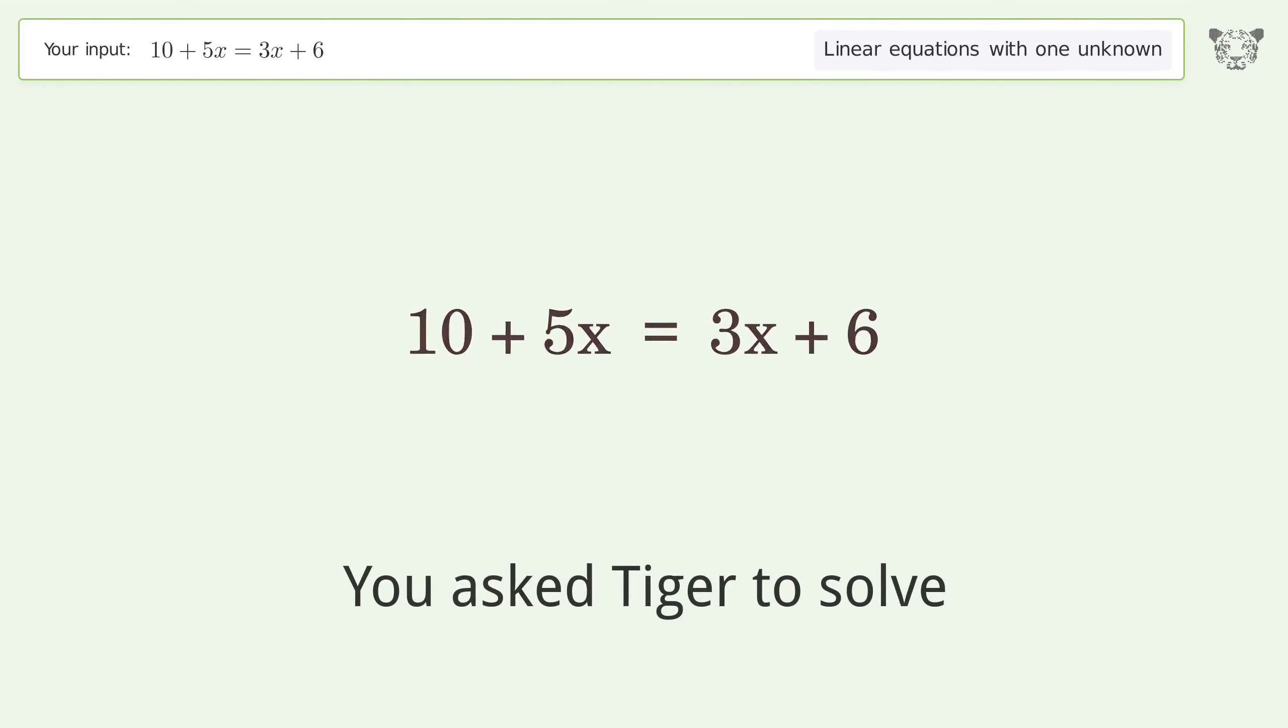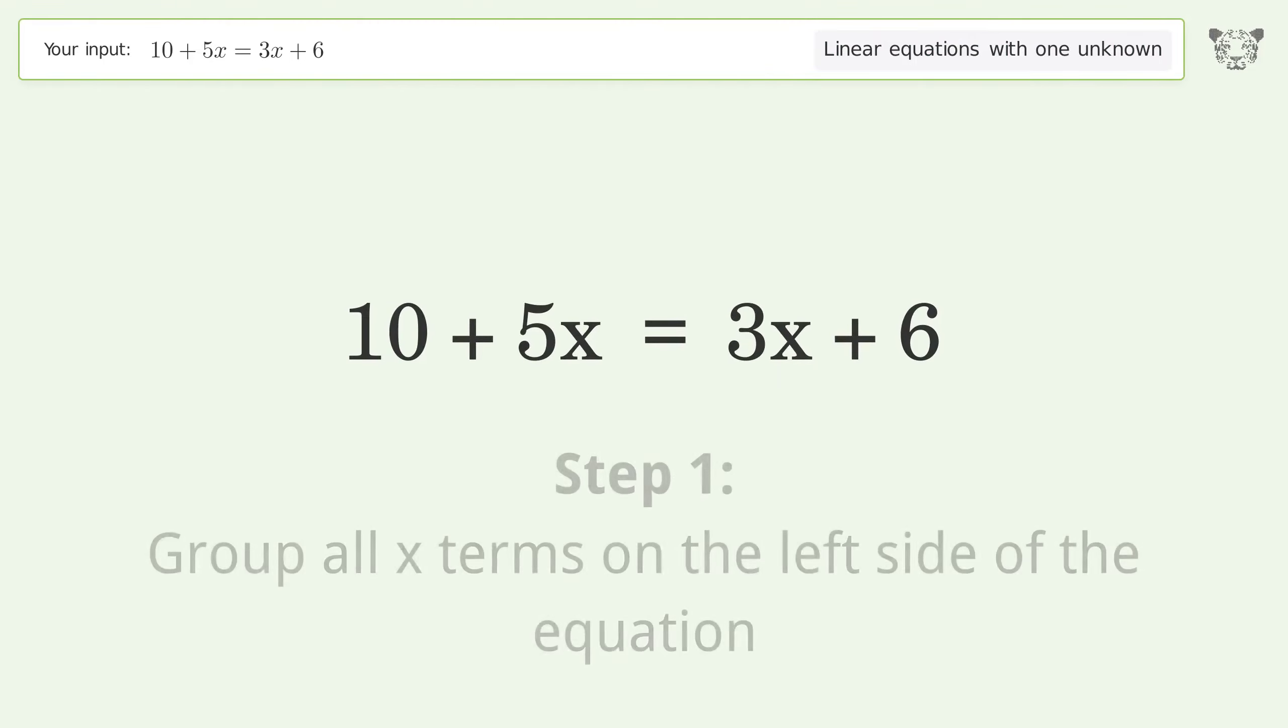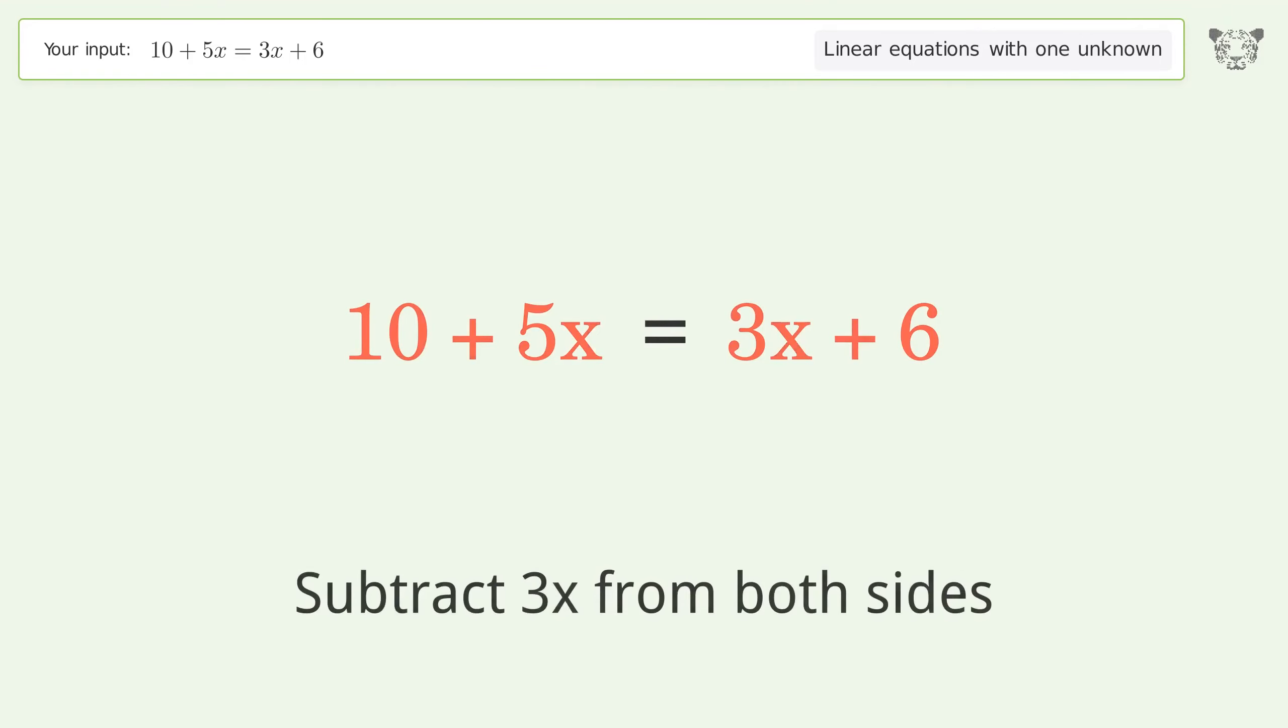You asked Tiger to solve this. This deals with linear equations with one unknown. The final result is x equals negative 2. Let's solve it step by step. Group all x terms on the left side of the equation. Subtract 3x from both sides.